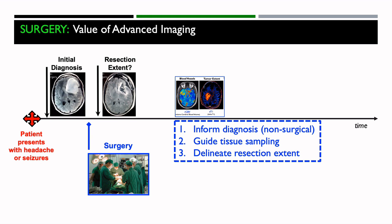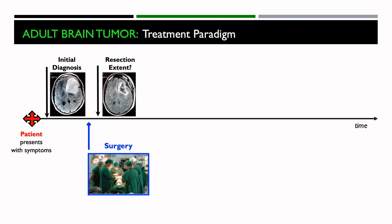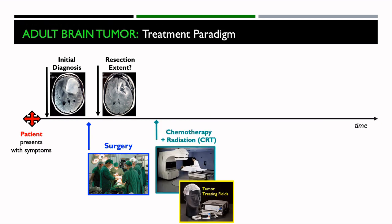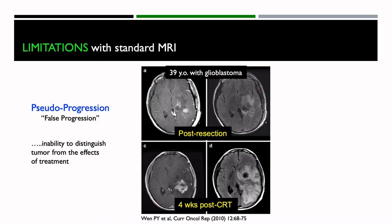In summary, as this first step of the treatment paradigm, the value of advanced imaging is that the RCBV maps can inform diagnosis, give you some indication of how aggressive the tumor is, and guide tissue sampling — guiding biopsies towards the site of the tumor that looks to be most aggressive. Then with our Delta T1 maps, we can delineate the extent of resection. The next step is chemotherapy plus radiation therapy, or possibly tumor-treating fields, and again we monitor with MRIs trying to determine if there's a recurrence.